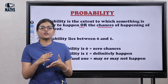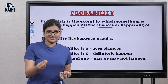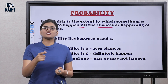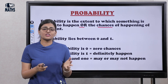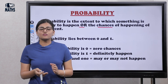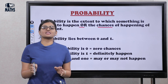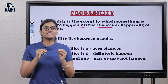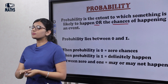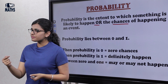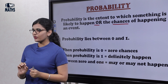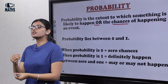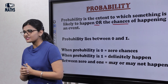For example, if you had a test and you asked your friend, 'Will you pass?' He says, 'There is no chance.' He is definitely sure that he will not pass. So the probability of his passing is zero. Whatever thing is not possible, its probability is zero.